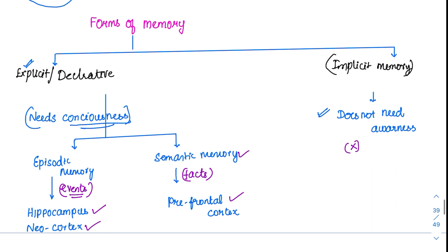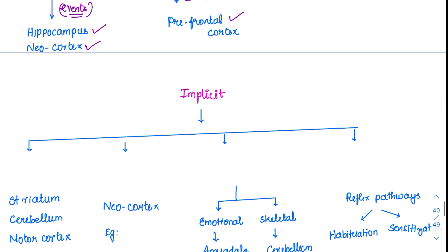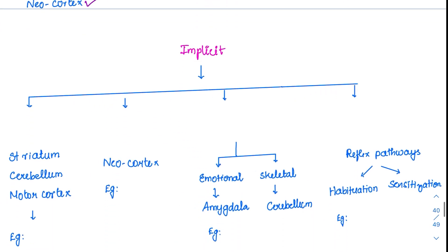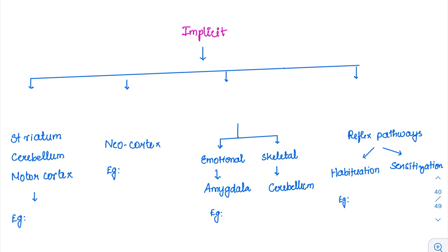Coming to implicit memory, there are several divisions and all of them are important. Explicit memory has episodic and semantic memory. Implicit memory has four further classifications. One already mentioned is priming — I give you some information and based on that you give me answers. Let us study them one by one. The first one is procedural.